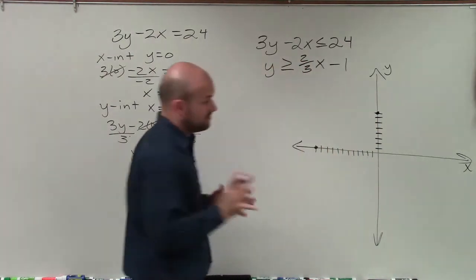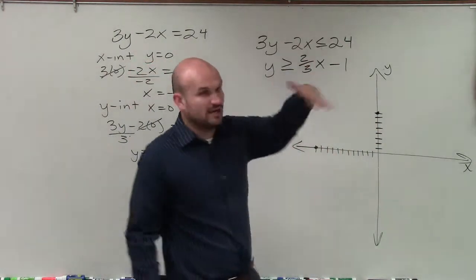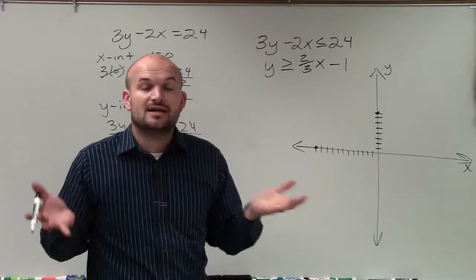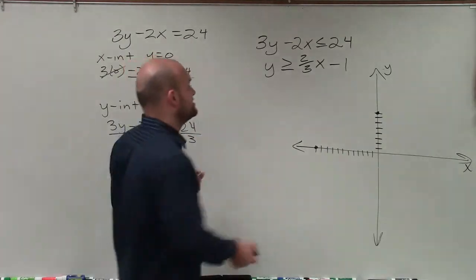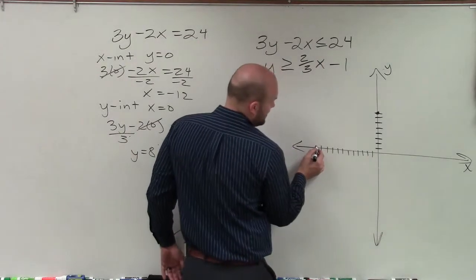So now I can connect these. But before I connect them, I want to go back to my inequality and determine, is my boundary line going to be shaded, or is it going to be dashed? And since this is less than or equal to, I'm going to have a solid line.